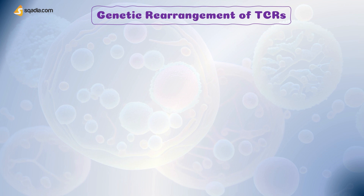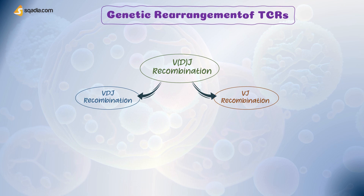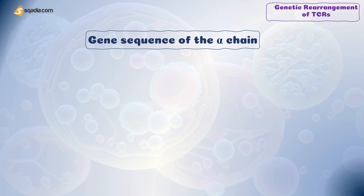Coming back to the genetic rearrangement of TCRs: this genetic rearrangement is the same as that of immunoglobulins and is also named as V(D)J recombination — sometimes it's just VJ recombination, and sometimes VDJ recombination, depending upon the gene segments involved. As the most abundant TCRs are alpha-beta TCRs, we will discuss the genetic rearrangement of alpha-beta chains here.